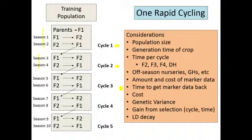There are many considerations when you're trying to set up a rapid cycling genomic selection scheme. You must consider your population size, the generation time of your crop, the amount of time it's going to take to go through a season and through a cycle of selection. How many seasons would that be? It's shorter with F2s than it is with F3s or F4s. You can consider using off-season nurseries instead of your own location, or using greenhouses. Of course, you always have to consider the amount of marker data you're going to need, the cost, and the time to get the marker data back.